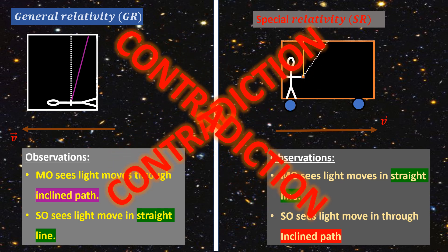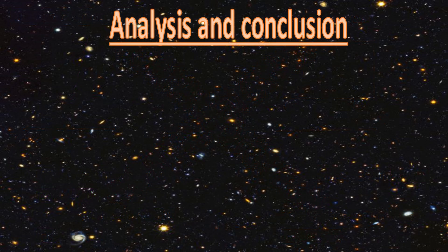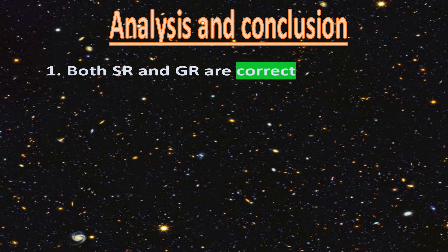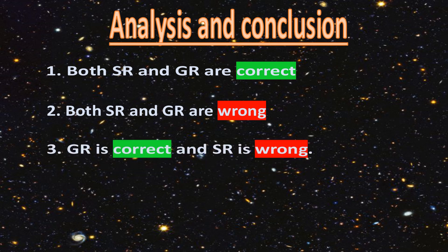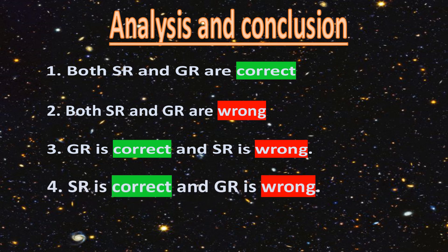So what is this telling us? There are four possibilities — four possible statements can be made, of which only one can be true. One: both special relativity and general relativity are correct. Two: both special relativity and general relativity are wrong. Three: general relativity is correct and special relativity is wrong. And four: special relativity is correct and general relativity is wrong. Which of these statements is the correct one? Let's look at them one by one.